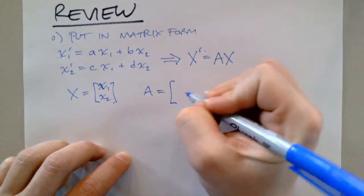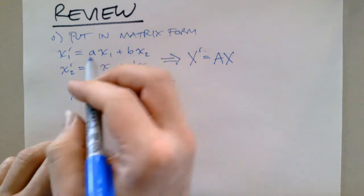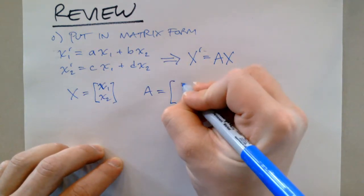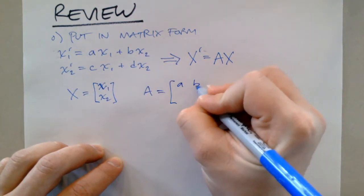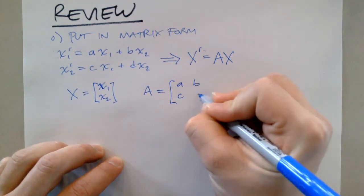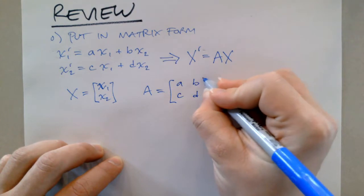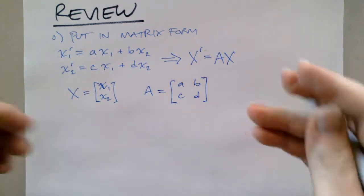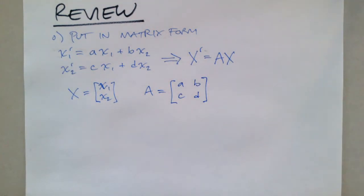The A matrix is formed by just pulling the constants — A, B, C, and D — from the system. So that's the first thing for getting into that form.